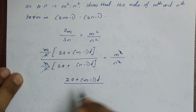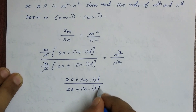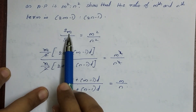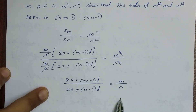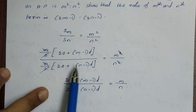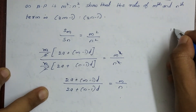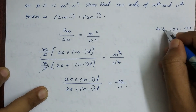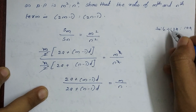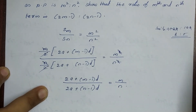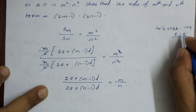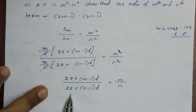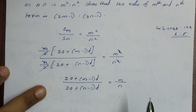After simplification, we get [2a + (m-1)d] divided by [2a + (n-1)d] is equal to m by n. We need to take the sum of m terms and sum of n terms equal to m by n. For example, if the ratio is 120 to 100, we simplify it to 6 to 5. So we cut the common factor and take the ratio of m by n. This becomes equation number 1.